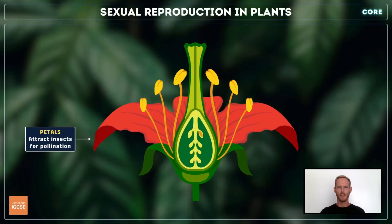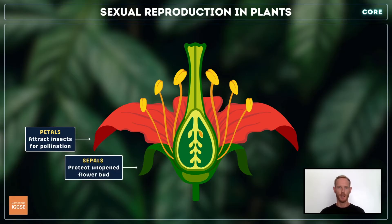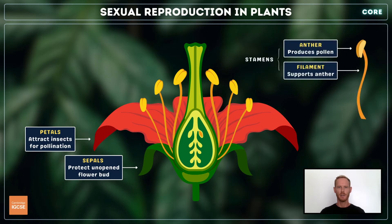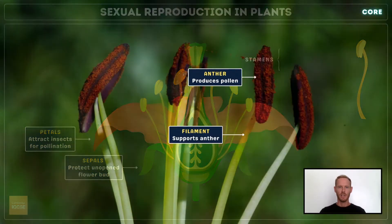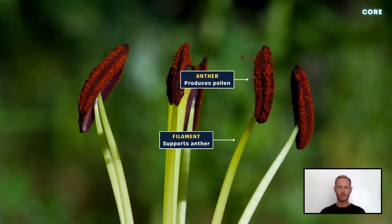We'll begin with the structures of an insect-pollinated flower. The petals are often large, brightly coloured, and scented to attract insects for pollination. They are surrounded by a ring of sepals, which enclose and protect the flower while in bud. The stamens are the male reproductive organs of a flower. Each stamen consists of a long, slender stalk called a filament, with an anther at the tip. Each anther is made of four sack-like structures, in which pollen grains containing the male gametes are produced.